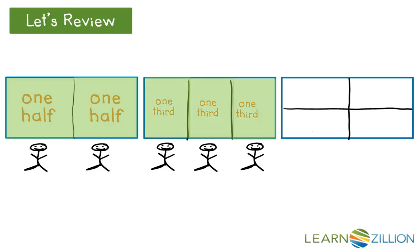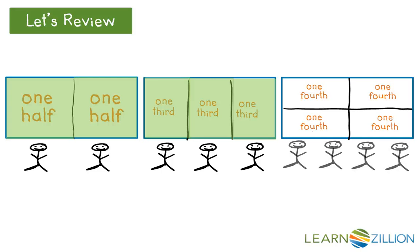Our last rectangle was partitioned into four equal shares, where each region is described as one-fourth of the whole. Four people can equally share this whole. Four-fourths make up the one whole.